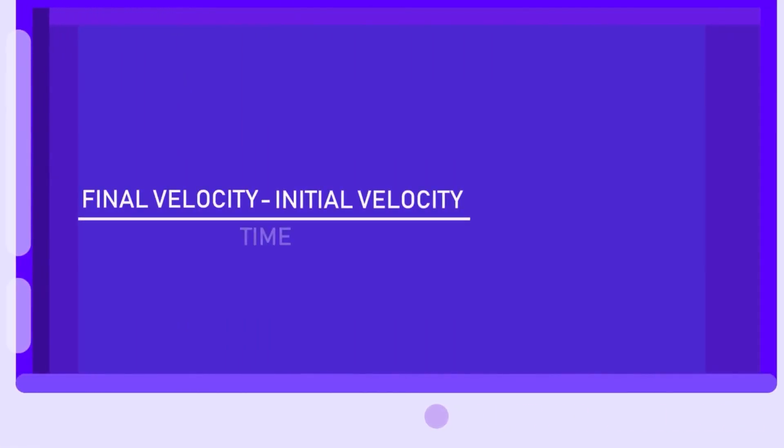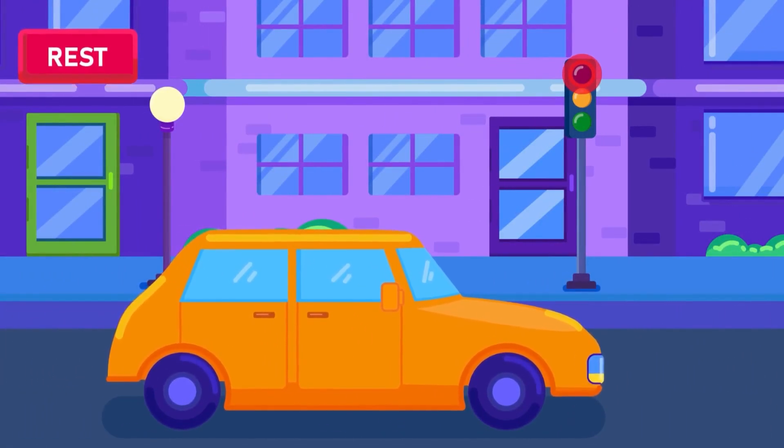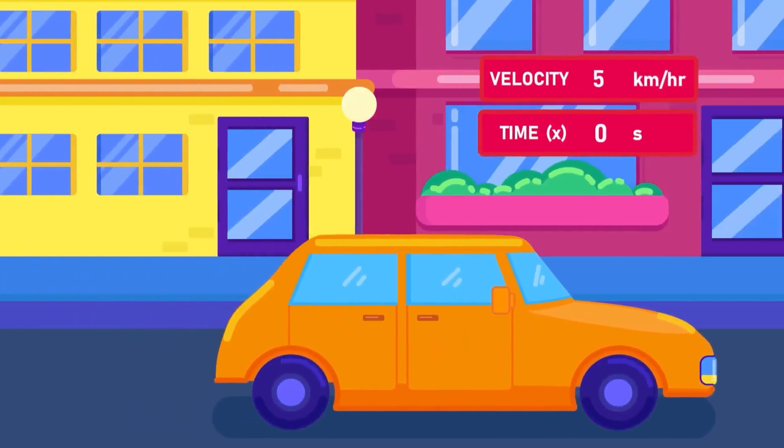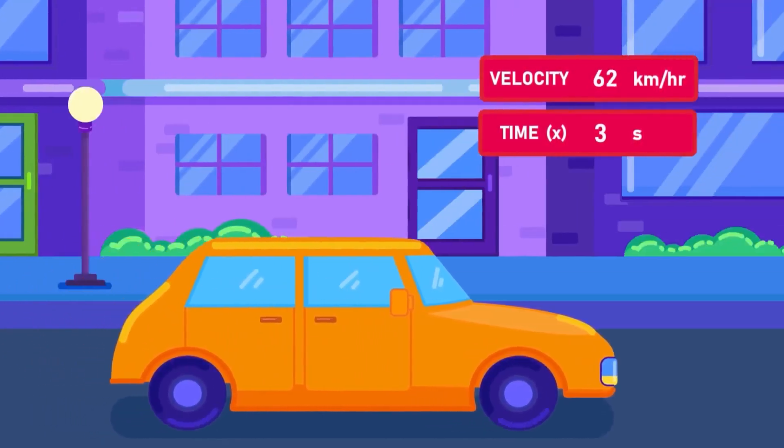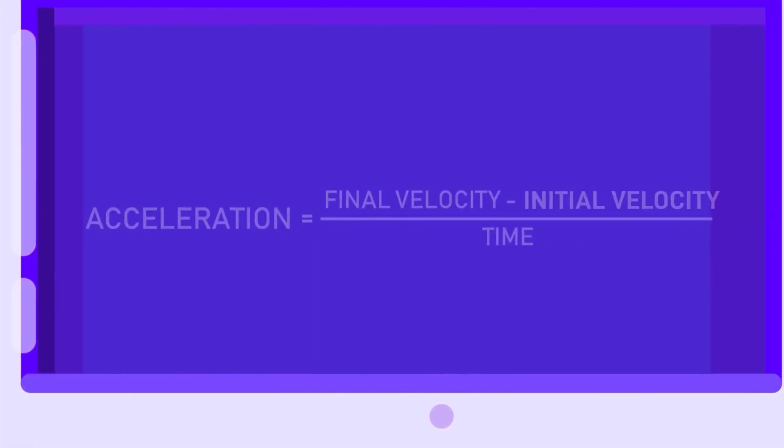The standard unit for acceleration is the unit of velocity divided by the unit of time, which becomes meter per second squared. The acceleration can be better understood with the following example. If a car starts from rest and reaches a velocity of 72 kilometers per hour in just 4 seconds, its acceleration can be counted as: The initial velocity is zero, since the car starts from rest. The final velocity is 20 meters per second. And the time elapsed is 4 seconds.